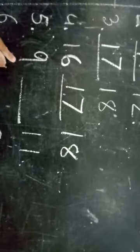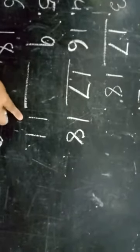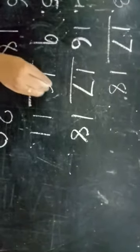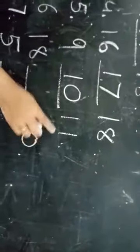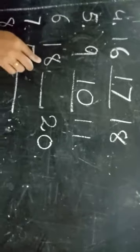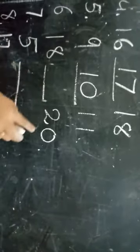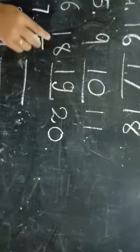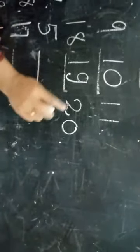11. So what number comes? 9, 10, 11. Next is 18, blank space, 20. What number comes in between? 19, 18, 19, 20.